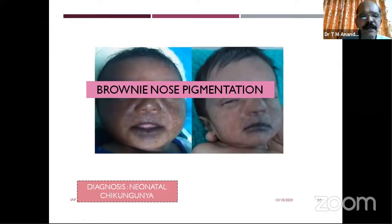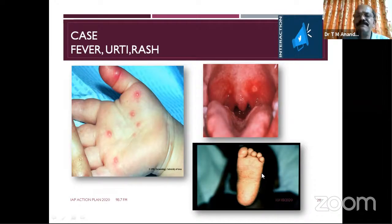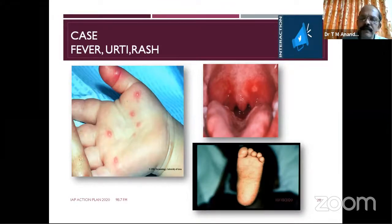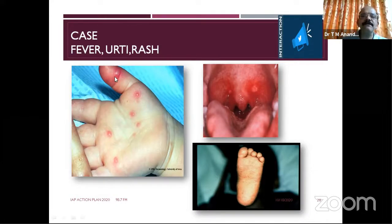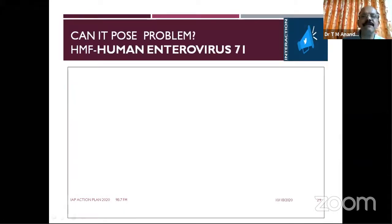For the last two years, instead of the classic hand, foot and mouth distribution, we are seeing rash predominantly at the elbow, knee joints, and gluteal region. Another difference we observe is the presence of large bullous lesions, which can sometimes be confused with chickenpox. Hand, foot and mouth disease is comparatively a safe disease — the only concern is that some children develop nail shedding and onychomadesis. But serious conditions are reported following Enterovirus 71, especially in Hong Kong and China.